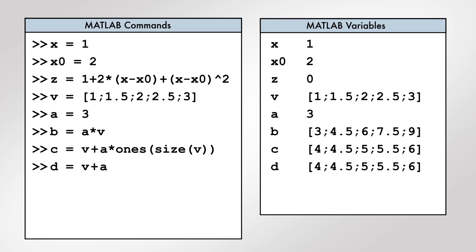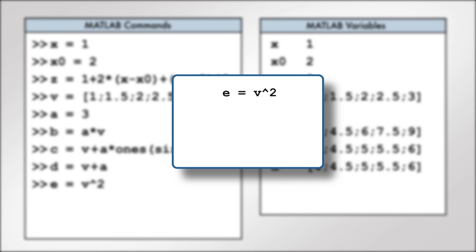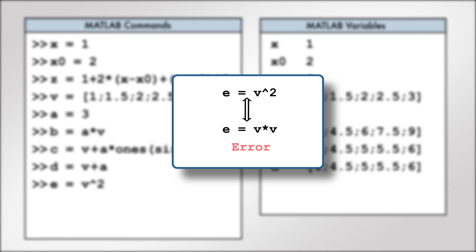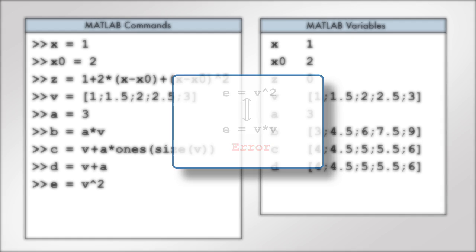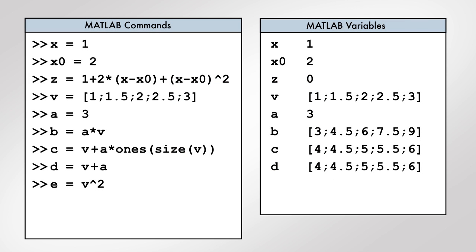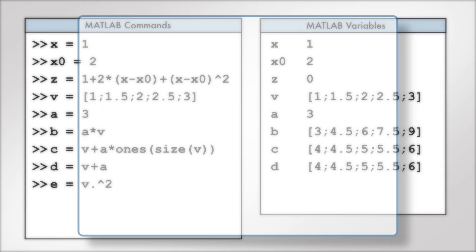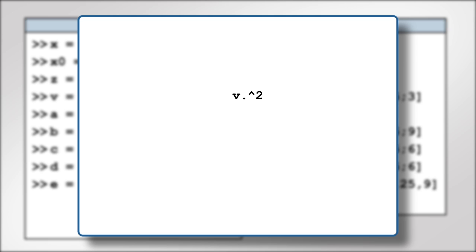What if we wanted to square each element of v? If you try using the caret symbol, MATLAB will generate an error, because the caret symbol identifies the power operation as a matrix multiplication of v with itself — an operation that is invalid since v does not have an equal number of rows and columns. Instead, we should apply an element-wise power, which is denoted by a dot-caret, as in this command. This syntax raises each element of the vector v to the second power.